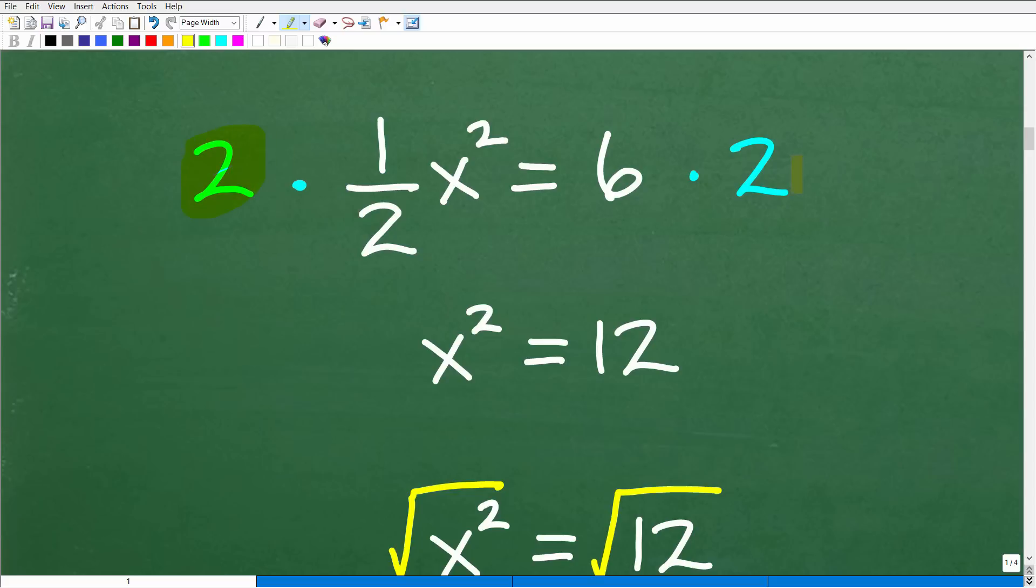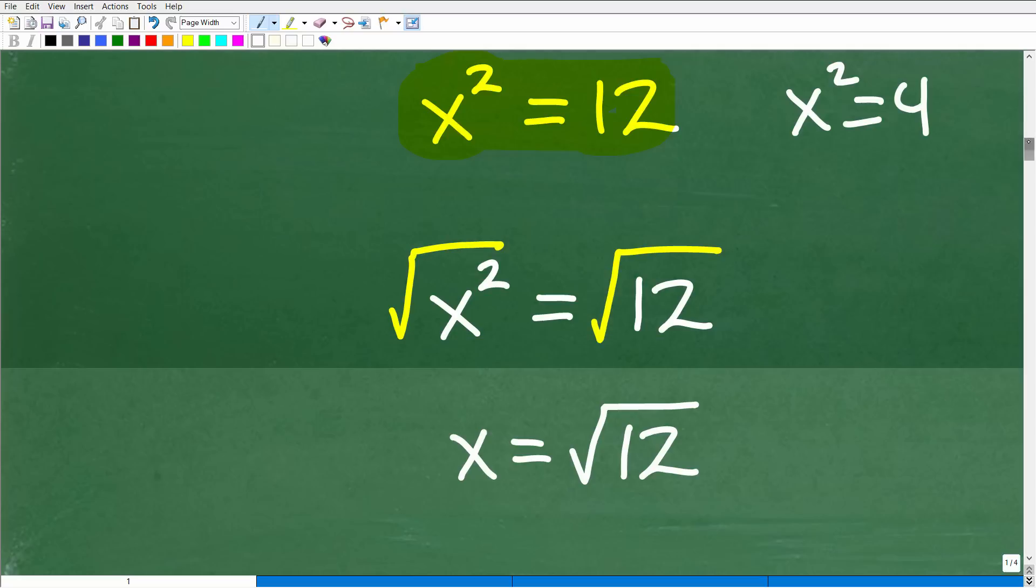Okay. So, now that we know that LCD is 2, we're going to multiply both sides of the equation by 2. And the objective there is, again, to clear the fraction. So, 2 times 1/2 is 1 or 1 x squared. We can just write x squared. And then 6 times 2 is, of course, 12. Okay. So, now here we have a simple quadratic equation, x squared is equal to 12. This is very much like this previous problem I just showed you, x squared is equal to 4.